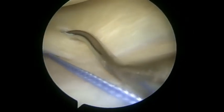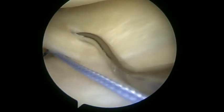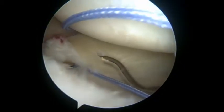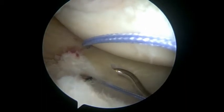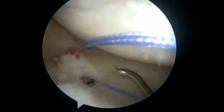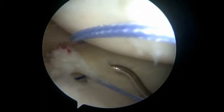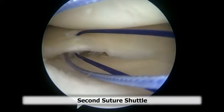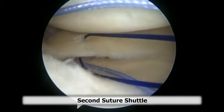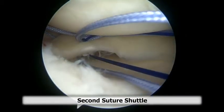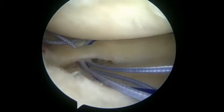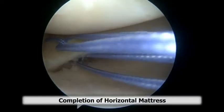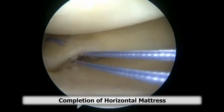We then prepare to create our horizontal mattress by shuttling a PDS through the meniscus more centrally. This is grasped and pulled out of the medial portal similar to the first PDS. The superior limb of the PDS is tied around the superior limb of the suture, and we pull on the inferior limb of the PDS, bringing a horizontal mattress stitch through the meniscus.